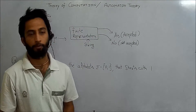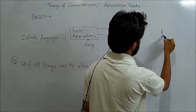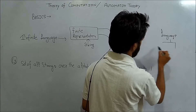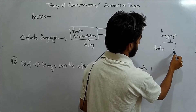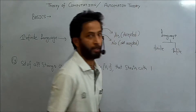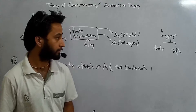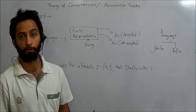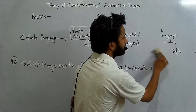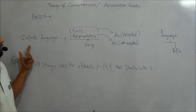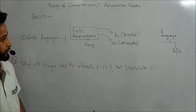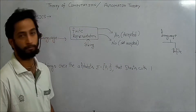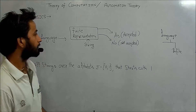In the previous lecture we saw two types of languages: finite and infinite. If the given language is finite, that is okay. But if the language is infinite, there is a problem — we have to convert that infinite language to a finite representation, then take a string and answer yes or no, meaning whether the string is accepted or not.